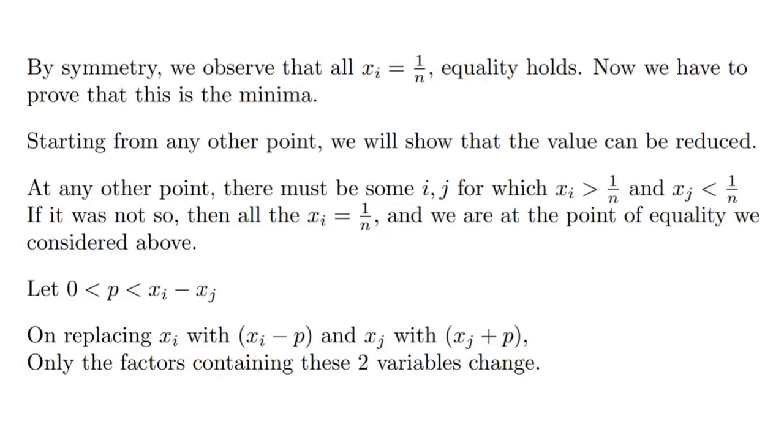By symmetry we observe that at all x equal to 1/n, equality holds. Now how do we prove that this is the minima? Starting from any other point, we show that the value can be reduced. For any other point, there must be some x_i greater than 1/n and x_j smaller than 1/n. If it wasn't so, then all of the x's would be equal to 1/n and we are at the point of equality that we considered above that we claim is the minima.